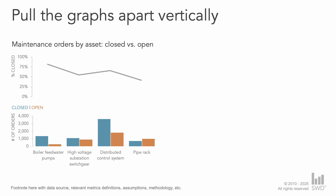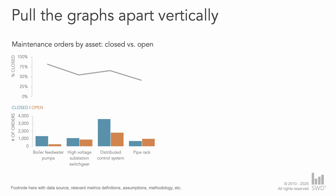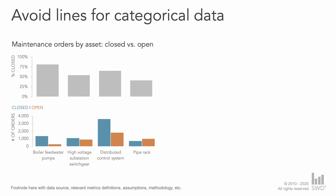Having made this change, I noticed something off. Lines work well for continuous data over time, but here we're dealing with categorical data — those asset types. In this instance, joining the closure rates across each asset creates a relationship that just doesn't exist. To correct this, I'll convert the line to individual bars, which will better represent this discrete, distinct data.